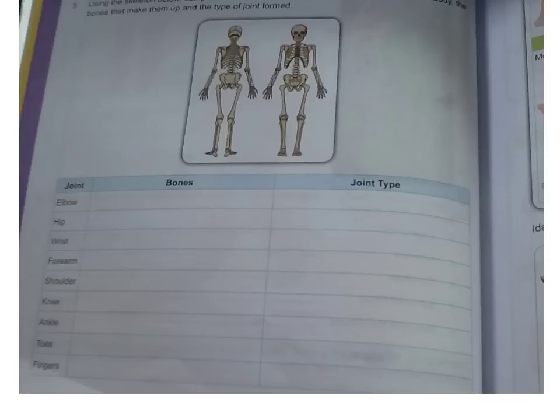At the bottom of page 44, I want you to complete the table where you fill in the name of the bones at that joint and then the type of joint that it is. For example, the elbow — that is the ulna and humerus bone and the type of joint is hinge. You can go ahead and complete that now for homework.